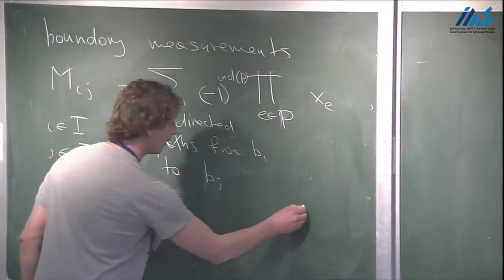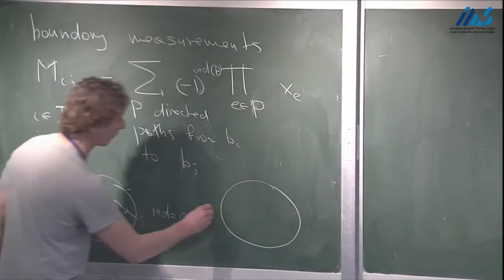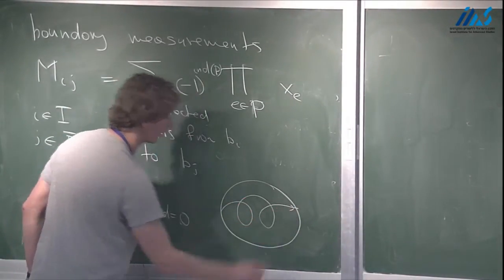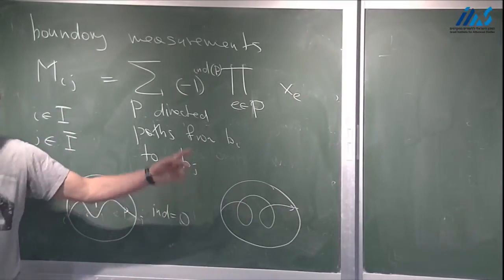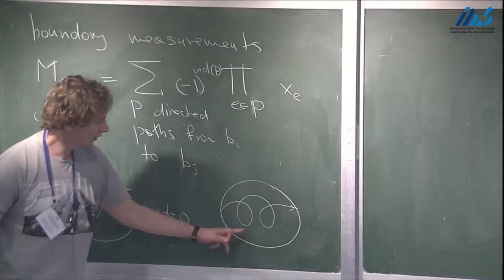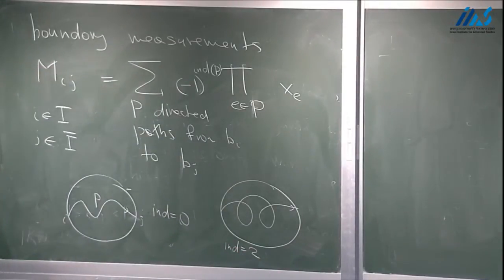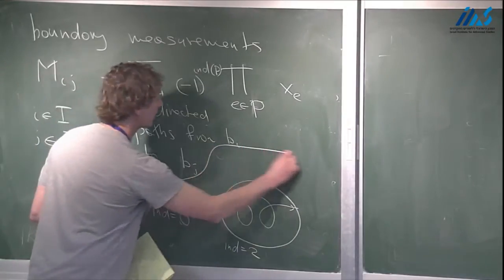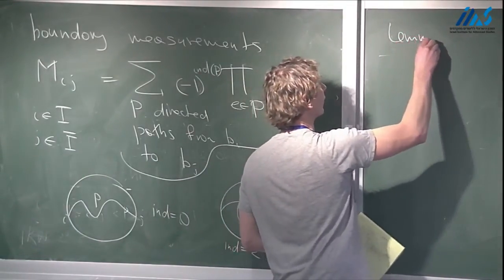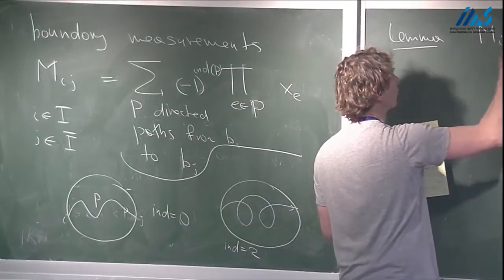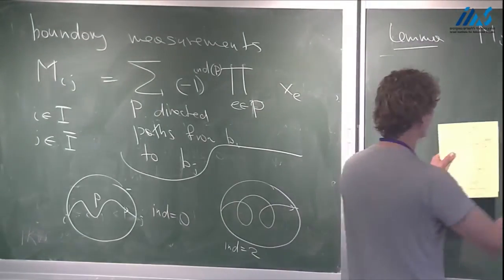To handle cycles, I introduce an extra parameter called the winding index of a path P. If a path has no self-intersections, the index is zero. If the path winds around — making self-intersections — you look at the tangent vector and count how many times it turns around. I count paths with sign (-1) to the winding index. With this signed sum, the lemma is that m_{i,j} is a subtraction-free rational expression in the edge variables x_e.